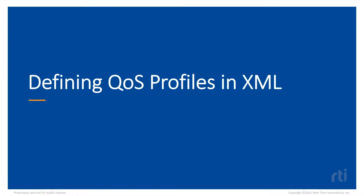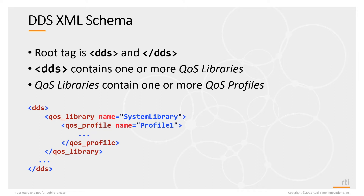QoS profiles in DDS are defined using XML, and the XML schema or syntax is actually a formal OMG definition. The root tag is DDS, and within DDS you'll have one or more QoS libraries. A QoS library will contain one or more QoS profiles.